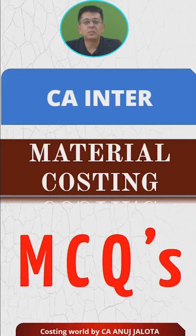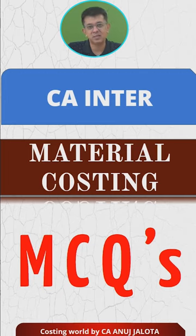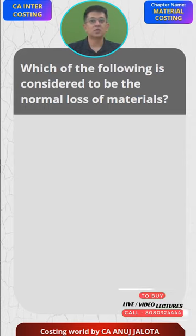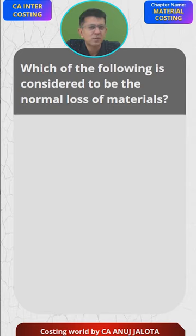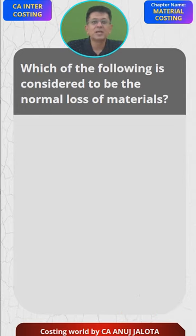Hi guys, welcome to CA Inter Material Costing MCQs. I'm making a video on each of these MCQs so you all know the logic — why the correct answer is correct and why the wrong answers are wrong. So let's do it. The question is: which of the following is considered to be a normal loss for material? Normal loss is a loss that is expected to happen. There are two types of losses — normal loss and abnormal loss.